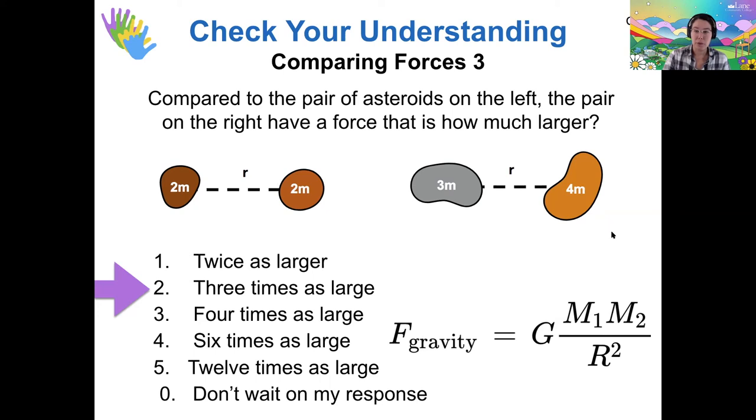Is somebody willing to share how you arrived at this conclusion? So here, if we're multiplying the 4 by 3, we get 12 divided by 2 by 2, which is 4. 12 divided by 4 is 3. So that is a good explanation of the proportionality on this product of the masses. Awesome.